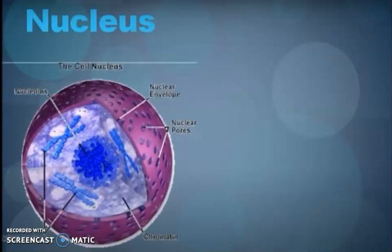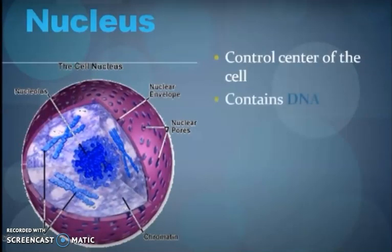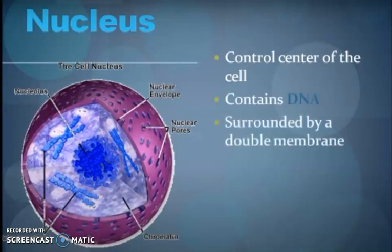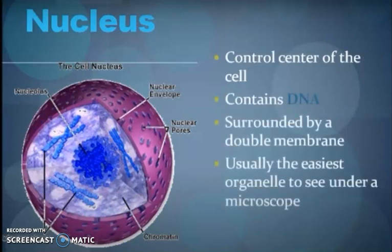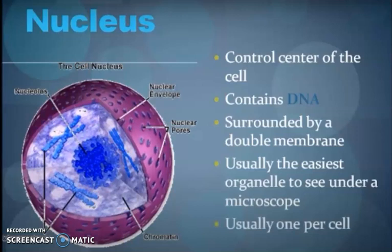Now we are going to discuss about the nucleus. It is called the control center of the cell and it contains DNA. It is surrounded by a double membrane. It is usually the easiest organelle to see under a microscope, and it can also be called the director of the cell.